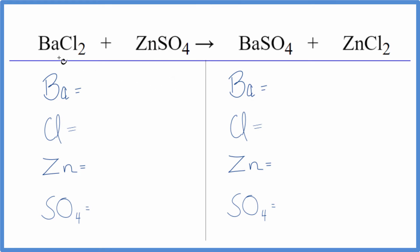To do this, let's count the atoms up. One barium, two chlorine atoms, one zinc. Then we get to the sulfate. We have it here,